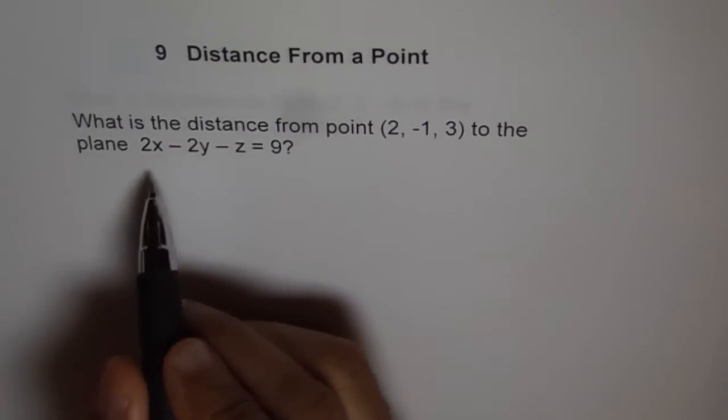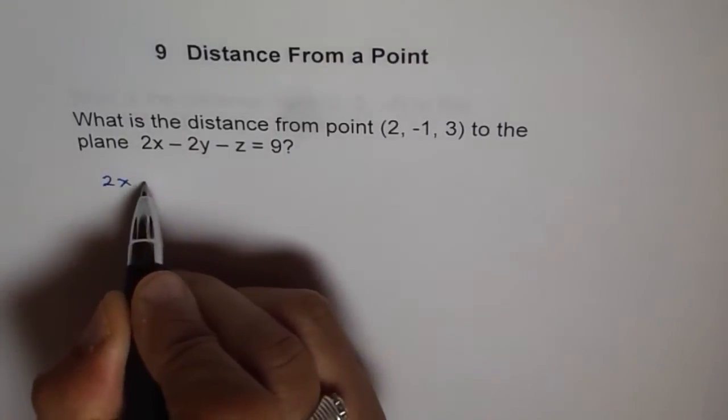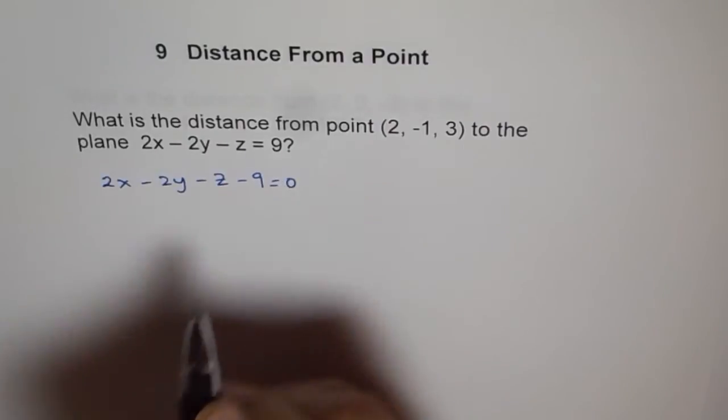This Cartesian equation of a plane we can write as 2x - 2y - z - 9 = 0.